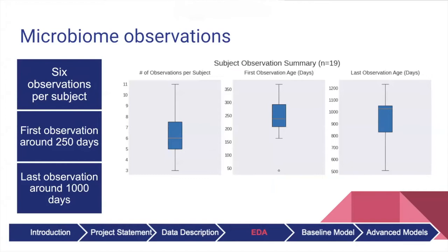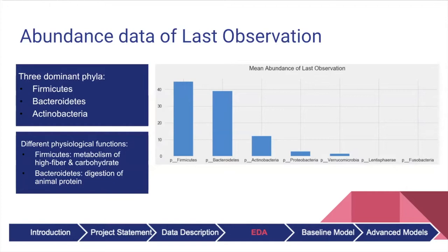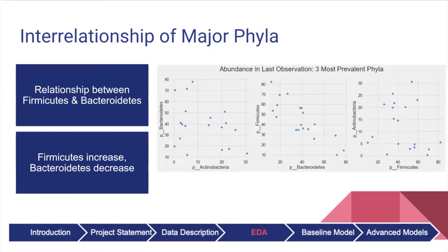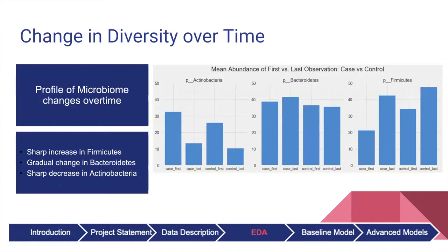For the microbiome data, there is a median of 6 observations per subject, ranging from about day 250 to around day 1000. Focusing on the last observations, there were 3 predominant phyla. Each phylum is known to perform different physiological functions, such as the metabolism of carbohydrates and the digestion of animal proteins. The data suggests an interrelationship between the two most prevalent phyla: as the number of Firmicutes increases, the number of Bacteroidetes decreases. There also appears to be a change in the profile of the microbiome, with a sharp increase in Firmicutes and only a gradual change in Bacteroidetes.